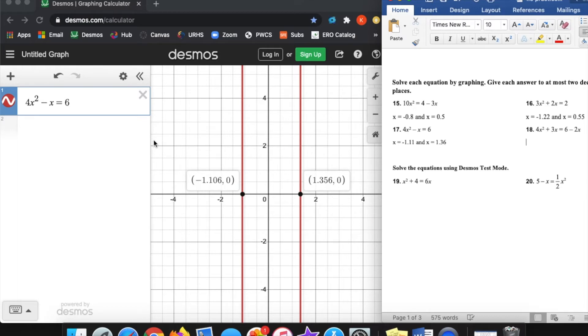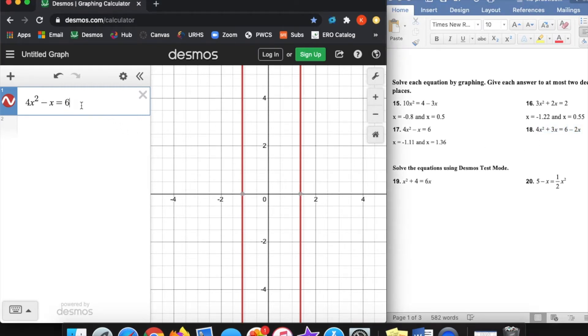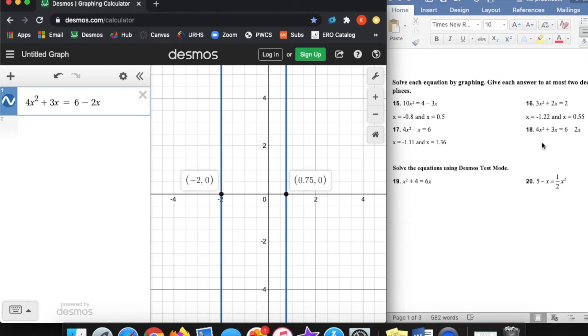And then 18, look at how complicated that equation is, crazy, right? We've got all these different x's. I'd have some like terms to combine if I solved it normally, but that's no problem. For Desmos, we just type that in exactly how it looks, 4x squared plus 3x equals 6 minus 2x. And again, we see those two lines appear, and the numbers aren't even that complicated. That's great, so x equals negative 2 and x equals 0.75.